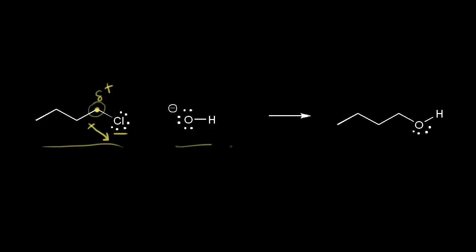If we look at hydroxide ion, which we could have gotten from something like sodium hydroxide, we know that this negatively charged oxygen would be the nucleophilic portion. So hydroxide is going to act like a nucleophile, and this carbon on our alkyl halide is going to act like an electrophile. Opposite charges attract, so the negatively charged oxygen is going to be attracted to the partially positively charged carbon on the alkyl halide.